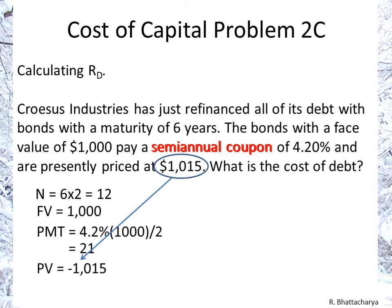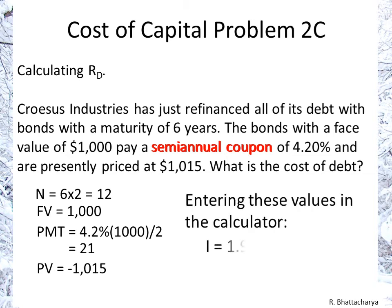Lastly, we have the price which is the present value, and I wrote negative $1,015 because that's the kind of input you need for your calculator. It will either not calculate or give you a wrong value if you don't use the negative. So just be careful about that.